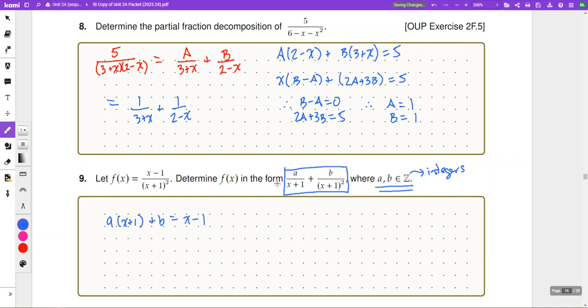So, that means that a times x plus 1 plus b must be equal to x minus 1. Once again, the reason being is that if we multiply both sides of f of x and this other form by the common denominator, we'll have this equation. So, that means that a x plus a plus b must be equal to x minus 1.